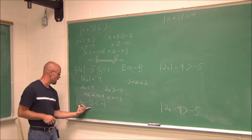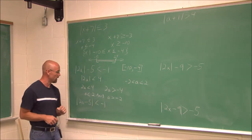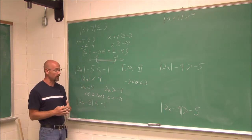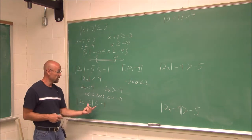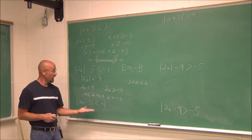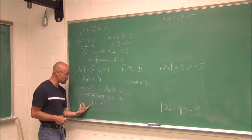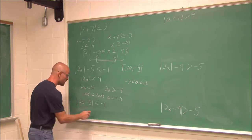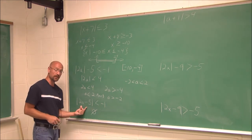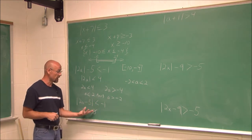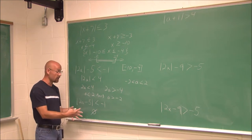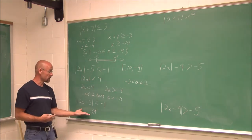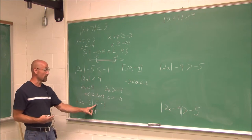Here we have the absolute value of 2a minus 5 is less than negative 1. Hopefully we assess it before we begin. An absolute value is always a positive value. If this is positive, it can't be less than a negative value. An absolute value is never negative, so it'll never be less than 0 — it'll never be less than a negative. So this has no solution. We can see that by assessing it before we begin. If we don't see that and we actually work through two intervals, we're going to find that it wouldn't make a true statement, because there is no solution that makes this true.